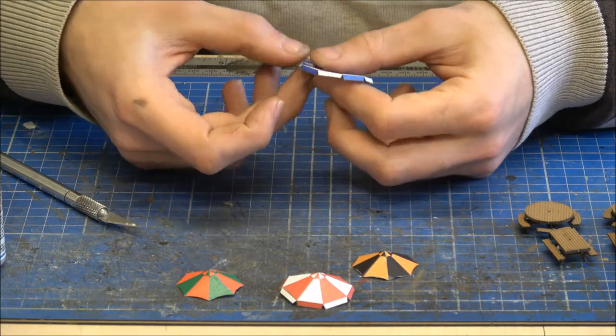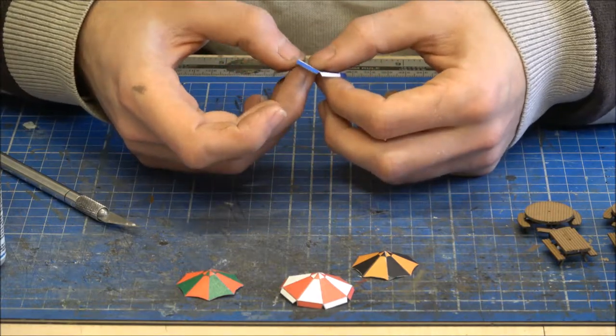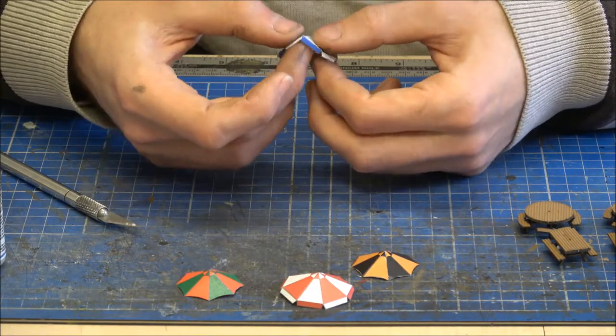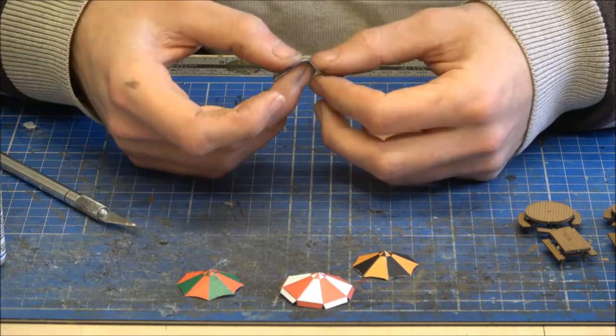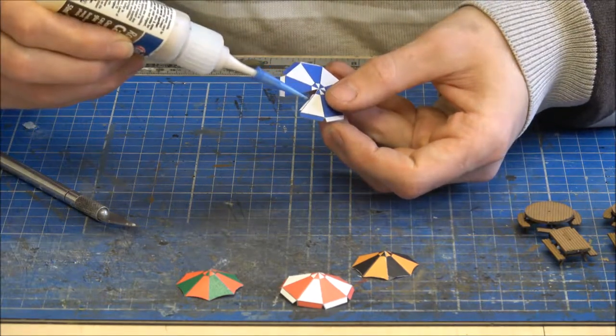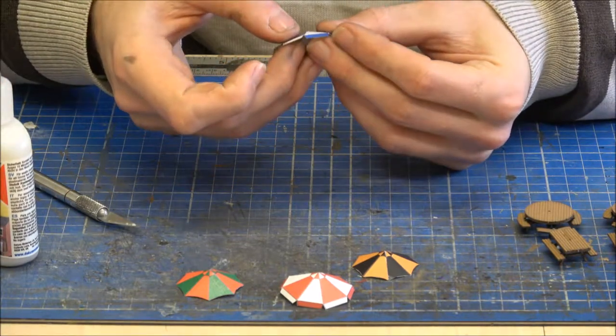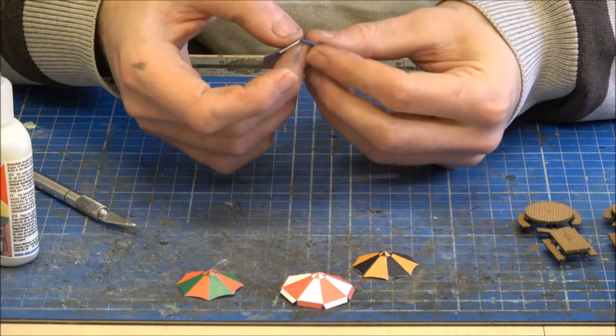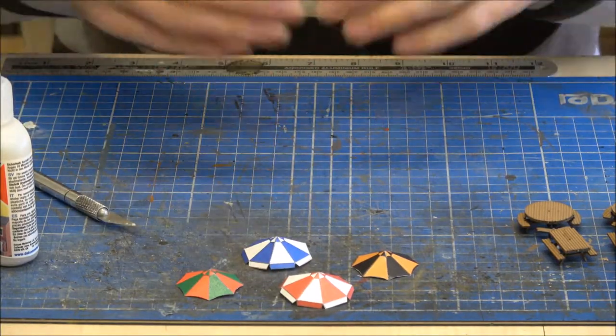Fold the edges around. And then tab and make up the cone of it. And glue that together. Like so. So that is those done.